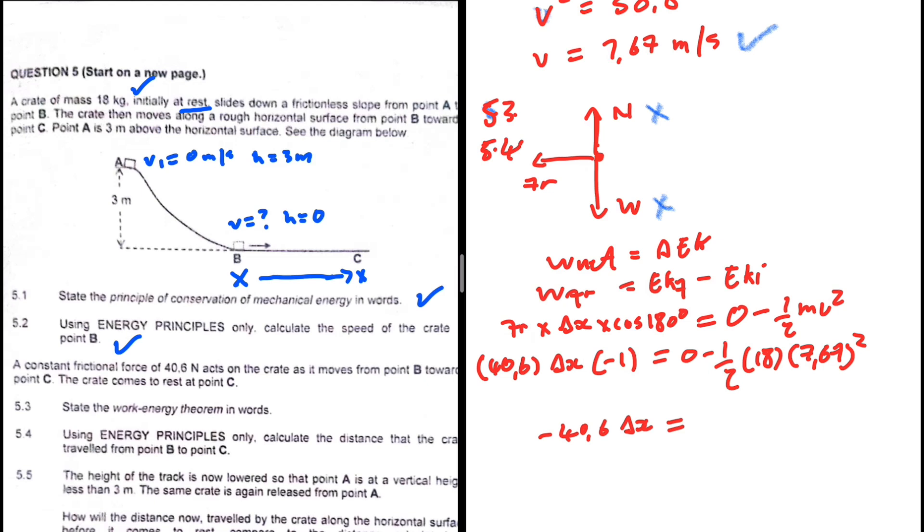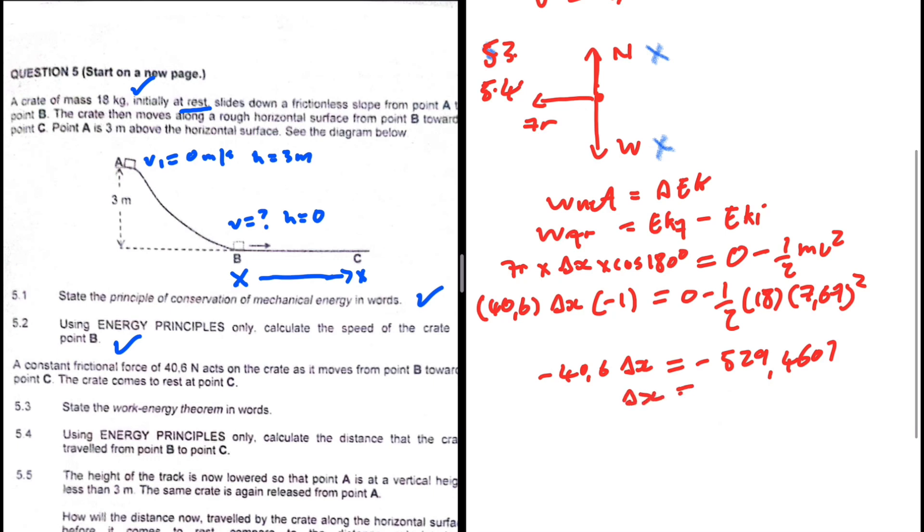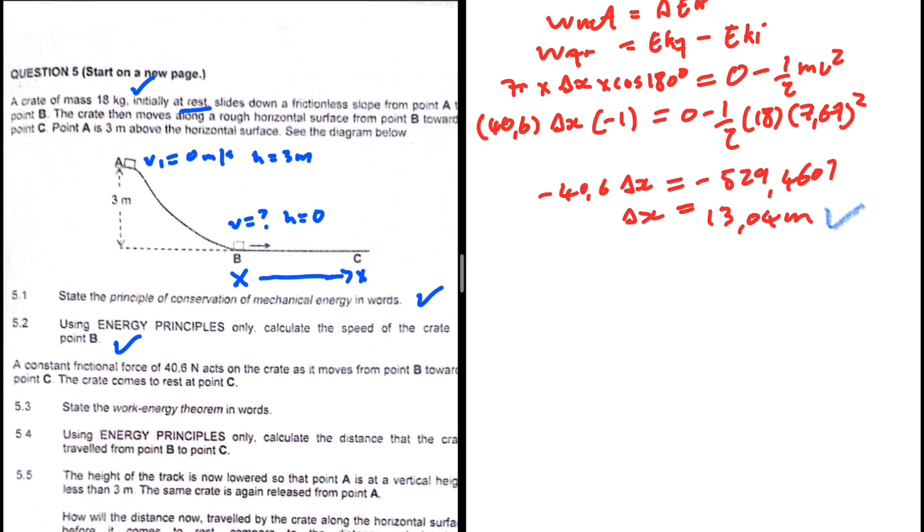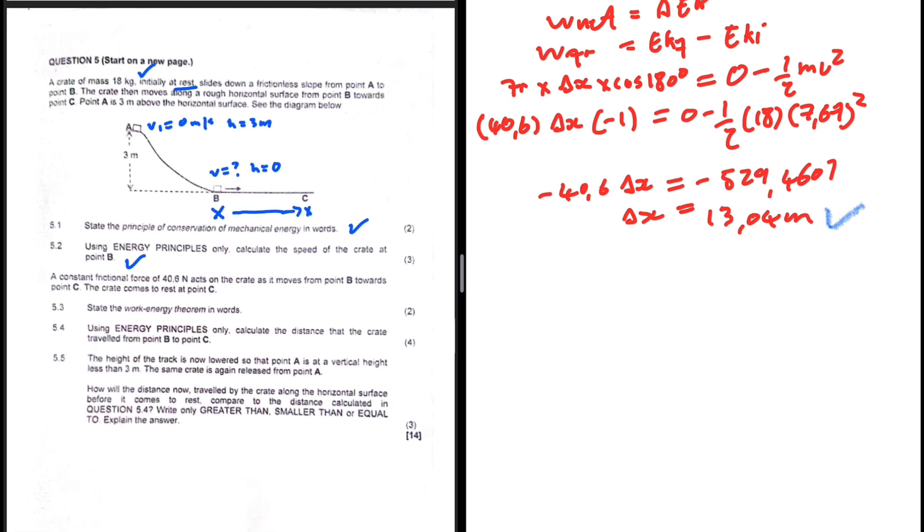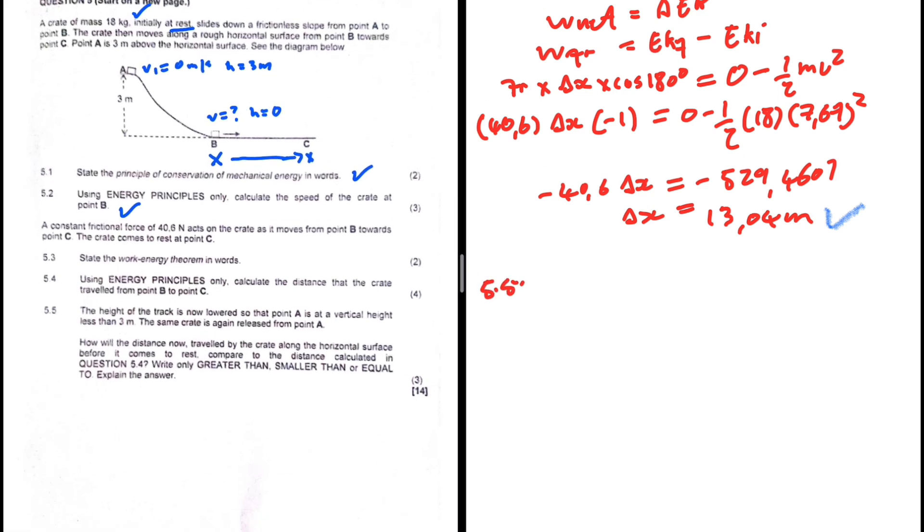Let me just put that in my calculator. So I'm getting minus 529.4601. I'm going to divide both sides by minus 40.6. I'm getting delta x equals 13.04 meters. So there we go, that is our delta x.